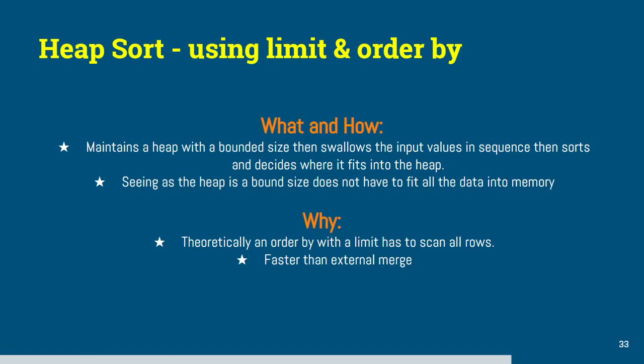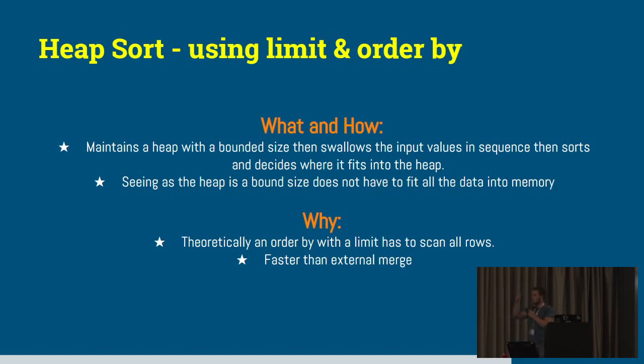Heapsorts. I hate this. I can't explain this to save my life. I'm going to try. So technically speaking, when using a limit and an order by, the query planner or Postgres has to scan through each and every one of your rows in the table. So maintains a heap with a bounded size, then swallows the input values in sequence, then sorts and decides where it fits in the heap. So, for example, you've got a little heap with a bound size, and you get all sorts of sizes coming in, now based on your order by. So let's say it's main ID, and you said limit 10, order by main ID ascending. So you'd want 1, 2, 3, to 10. But now it gets 10, 20, 21, 24, and it fits it into the heap. And as soon as the next input value comes that fits within the sequence, it will simply knock off the last value off the heap and maintains that size. So I hope that kind of makes sense to you guys. So why Postgres would use this? Once again, theoretically, an order by with a limit has to scan all rows, and this is faster than external merge, and it does make use of some memory.